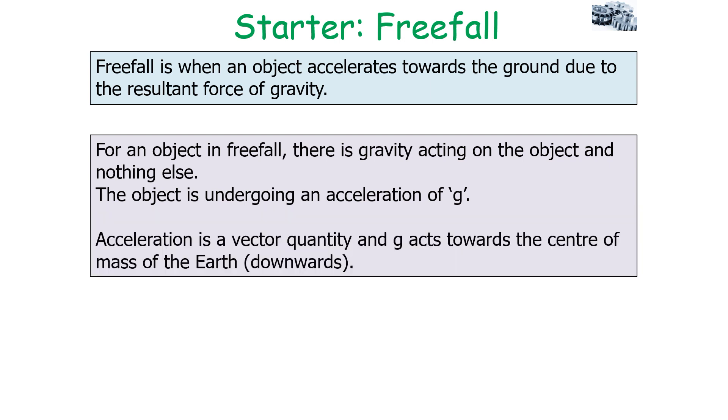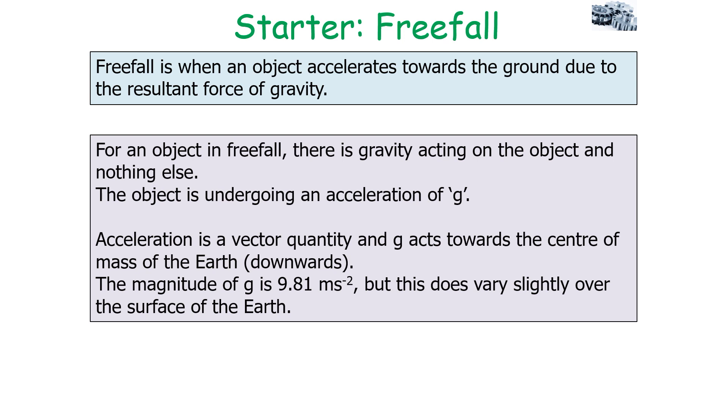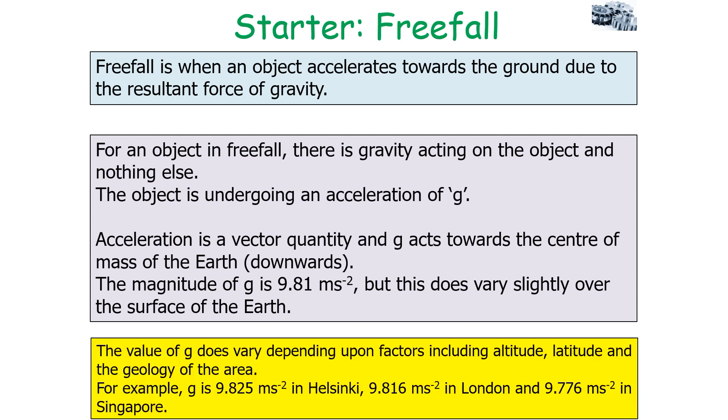Remember, acceleration is a vector quantity, and g acts towards the center of mass of the Earth, which from the perspective of someone on Earth is always downwards. The magnitude of g is 9.81 meters per second squared, but this does vary slightly over the surface of the Earth. The value of g can vary depending on factors including altitude, latitude, and the geology of the area. For example, g is 9.25 m/s² in Helsinki, 9.816 m/s² in London, and 9.776 m/s² in Singapore.